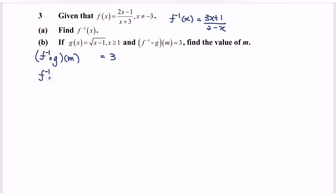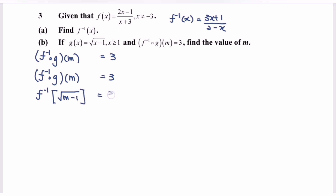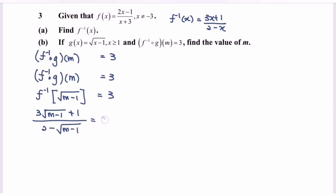Focus on f inverse composed with g of m equals 3. First, input m into function g: g(m) equals square root of (m minus 1). Then input that into f inverse, giving us: (3 times square root of (m minus 1) plus 1) over (2 minus square root of (m minus 1)) equals 3.